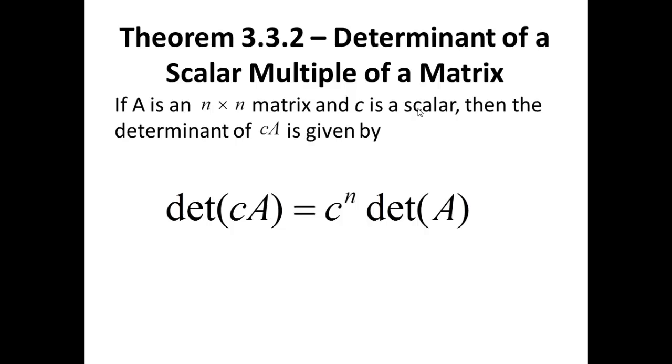Second, Theorem 3.3.2, Determinant of a Scalar Multiple of a Matrix. If A is an N by N matrix and C is a scalar, i.e. A is a matrix of order N and C is a real number, then the determinant of CA is given by the determinant of CA equals C raised to the N times the determinant of A. I pull out my scalar C from the determinant and raise it to the power N, and do not forget that A is an N by N matrix.